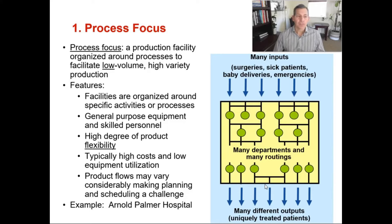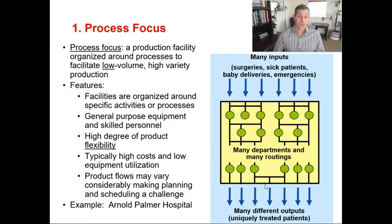Mass customization is difficult to achieve, but the rewards are great because if you can achieve high volume and high variety, that is everything that a customer would want. A process focus is a production facility organized around processes to facilitate low volume, high variety production. Facilities are organized around specific activities or processes, with general purpose equipment and very skilled labor. There's a high degree of product flexibility and quality, and it typically has high equipment costs and low equipment utilization. Product flows may vary considerably, making planning and scheduling a challenge.